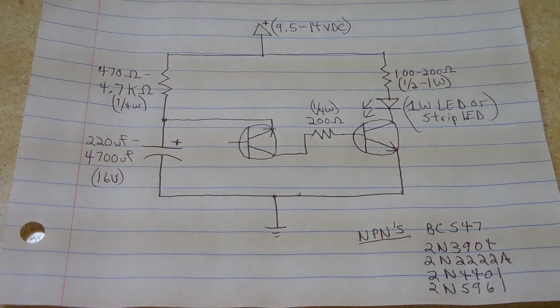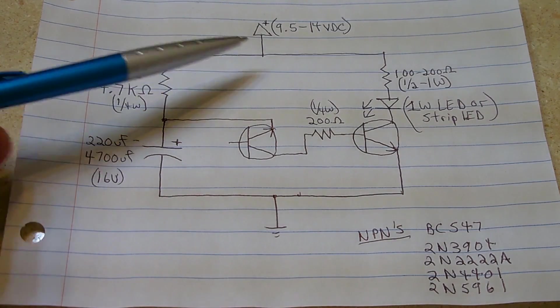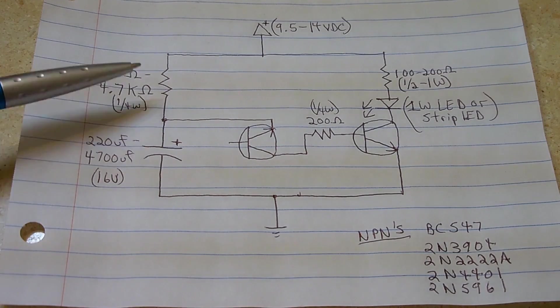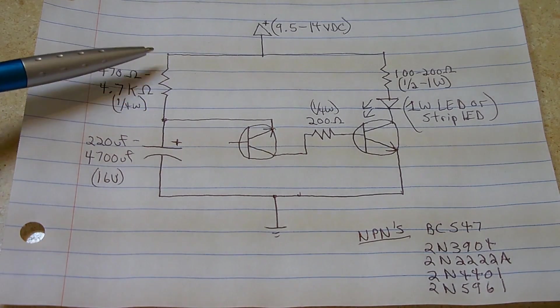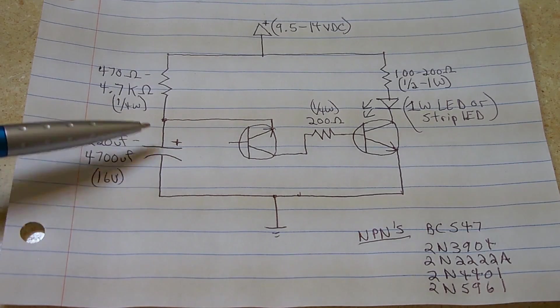Now the way this works is very simple. Power flows in on the top rail through the resistor. Now what the resistor does, it limits the flow of current to charge this capacitor.